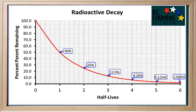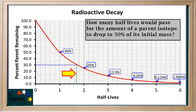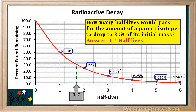This graph can be used for the decay of any isotope. It gives the percent of the isotope remaining plotted against the number of half-lives. We can use this graph to answer questions like: how many half-lives would pass for the amount of a parent isotope to drop to 30% of its initial mass? We go to the 30% mark on the y-axis and draw a line over to the curve, then drop a line down to the x-axis. It hits the x-axis at 1.7, so the answer is 1.7 half-lives.